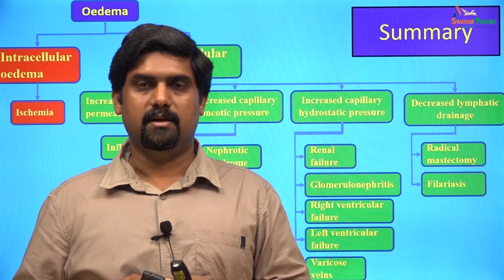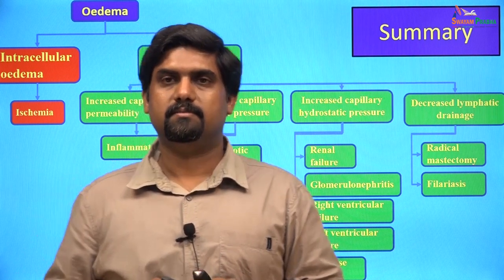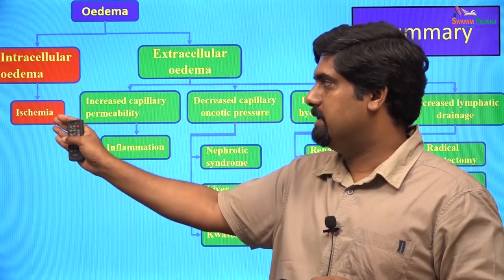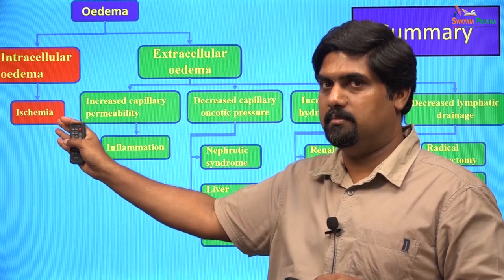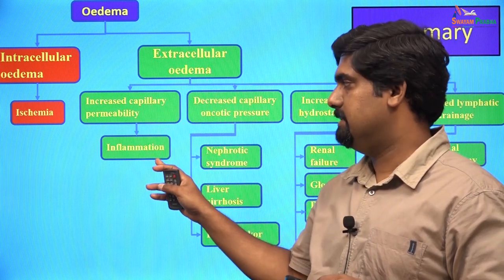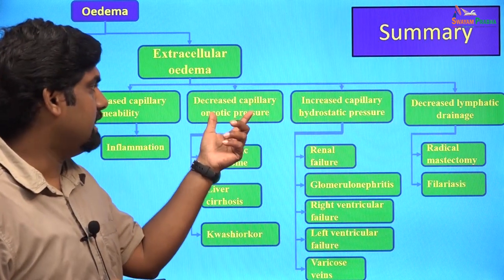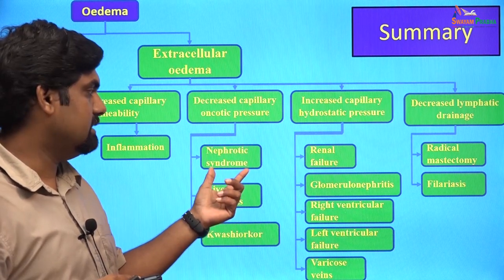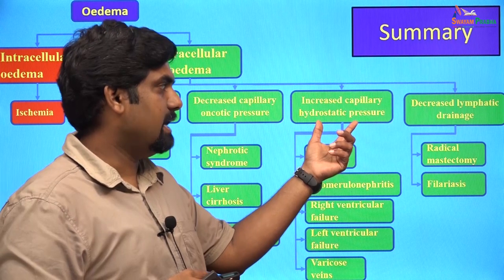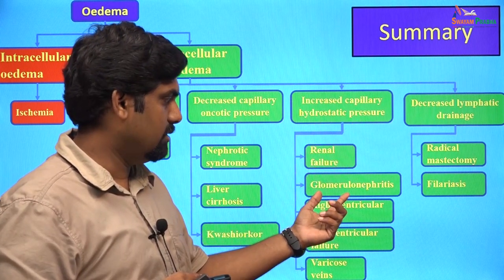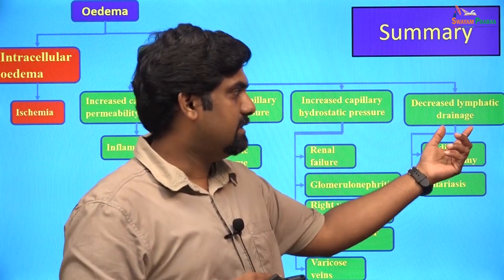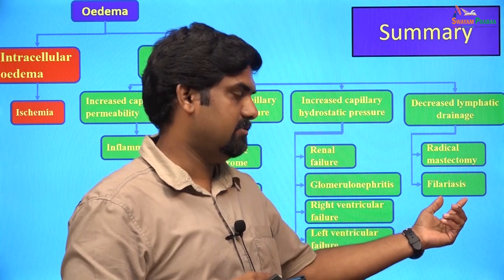We have come to the end of our discussion on edema. Edema can be classified into two types: intracellular edema and extracellular edema. Intracellular edema is caused by conditions like ischemia where there is reduced function of the sodium-potassium pump. Extracellular edema can be caused by various conditions: increased capillary permeability seen in inflammatory conditions; decreased capillary oncotic pressure caused by conditions like nephrotic syndrome, liver cirrhosis, and kwashiorkor; increased capillary hydrostatic pressure due to diseases like renal failure, glomerulonephritis, right ventricular failure, left ventricular failure, and varicose veins; and decreased lymphatic drainage seen in conditions like radical mastectomy and filariasis.